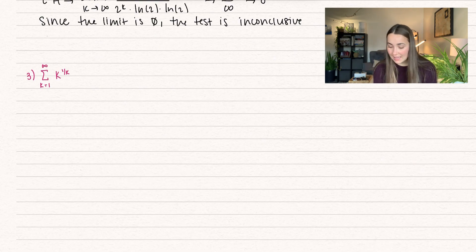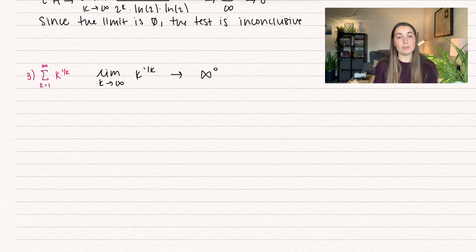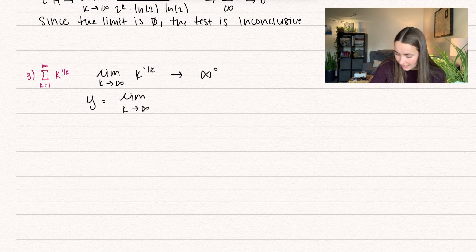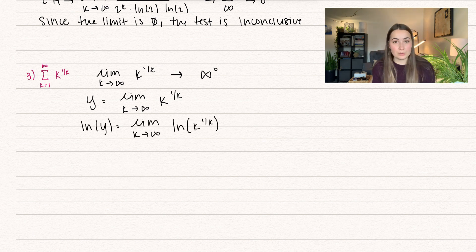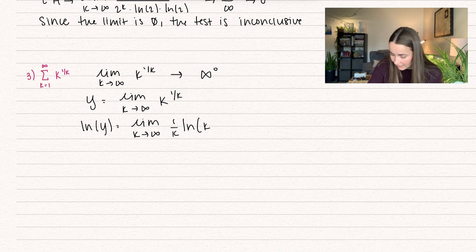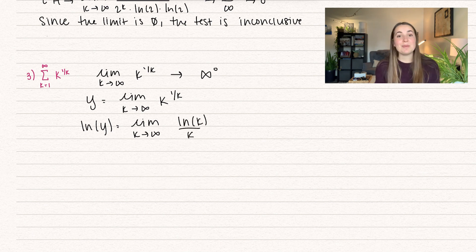One more example: k equals 1 to infinity of k to the 1 over k. We set up the limit as k approaches infinity of k to the 1/k. This approaches infinity to the power of 0, an indeterminate form. We let y equal that limit and take the natural log of both sides to bring the exponent down, using the property of natural logs. We get ln y equals 1 over k times ln k, and rewrite it as ln k divided by k, which approaches infinity over infinity, so we can use L'Hôpital's rule.